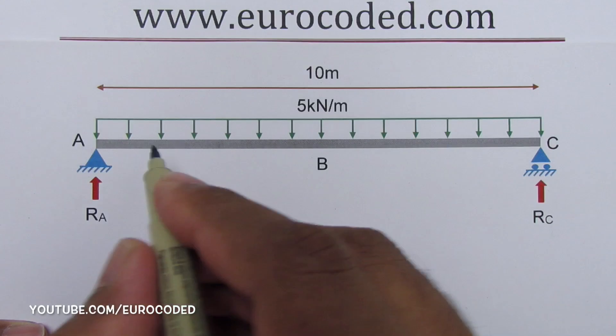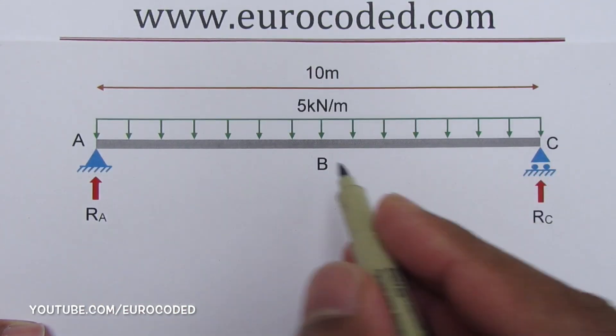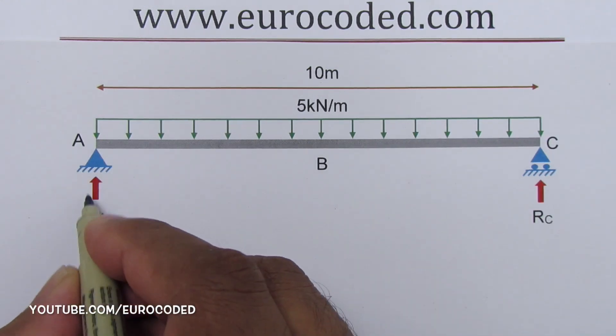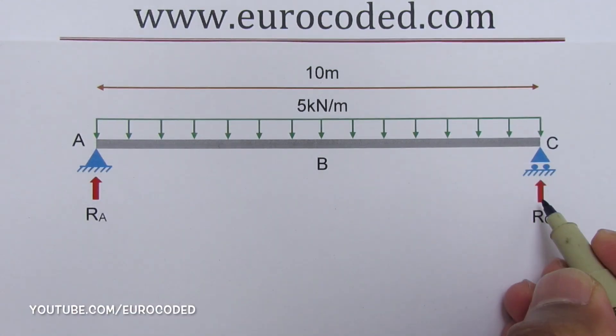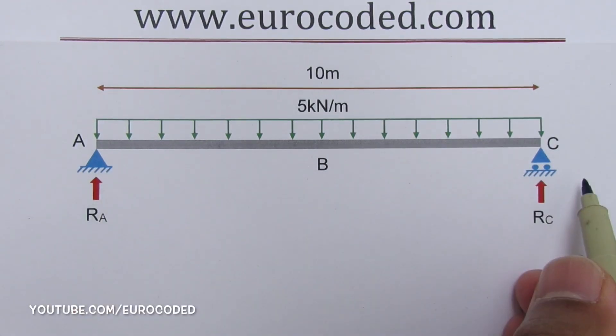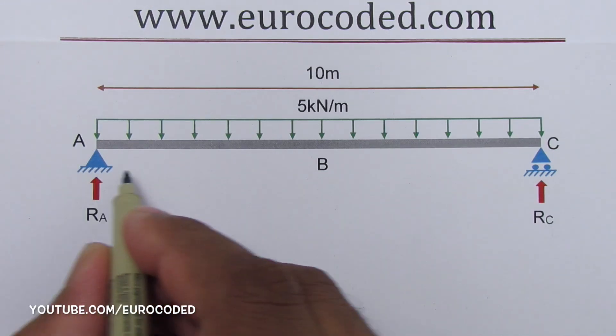As we have only vertical uniformly distributed load or UDL applied onto the beam, we would only have vertical reactions at A and C. By inspection we can say that there are no horizontal reactions at these supports because there are no loads applied in the horizontal direction.